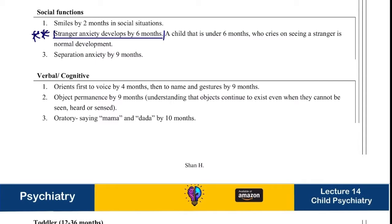Separation anxiety develops by nine months — another very important point. In terms of verbal and cognitive development, they will orient to voice by four months, then to name and gestures by nine months. They will understand that objects continue to exist even when not seen — object permanence — by nine months, and will say mama or dada by ten months.